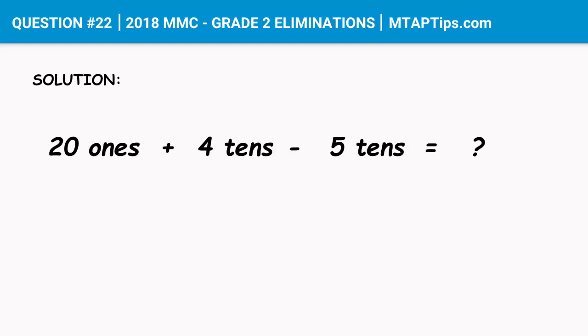Let's try to convert these place value numbers to real numbers. So 21 is equal to 20, and plus 4 tenths is equal to 40, then minus 5 tenths is equal to 50. So 20 plus 40 is equal to 60, and 60 minus 50 is equal to 10.